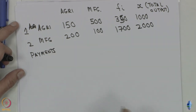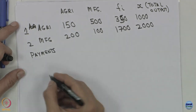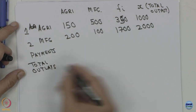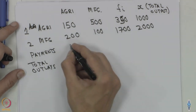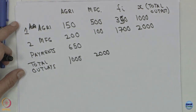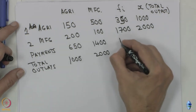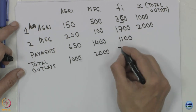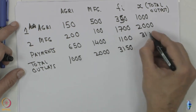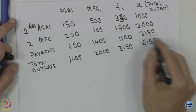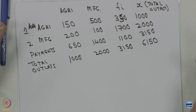There is also the payment sector — wages, taxes, profits, and whatever else we are looking at. Remember this has to balance out; total outlays must balance. So this must be equal to 1000, which means the payment value for agriculture is 650, and for manufacturing this will be equal to 2000, so it is 1400. The final demand for the payments is 1100. If you add this up, the total is 3150, and the total value added in the economy is 6150 in appropriate financial units.